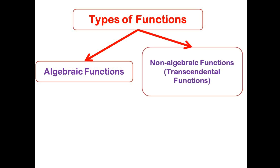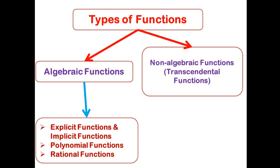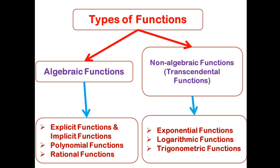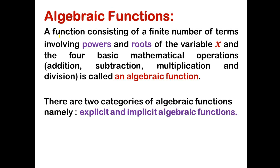There are broadly two types of functions: algebraic functions and non-algebraic functions or transcendental functions. Under algebraic functions we have explicit and implicit functions, polynomial functions, and rational functions. Under non-algebraic functions we have exponential functions, logarithmic functions, and trigonometric functions. An algebraic function is a function consisting of a finite number of terms involving powers and roots of the variable x and the four basic mathematical operations: addition, subtraction, multiplication, and division.